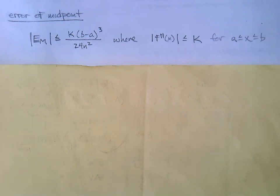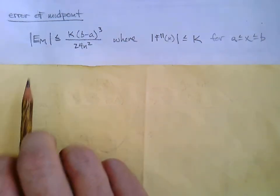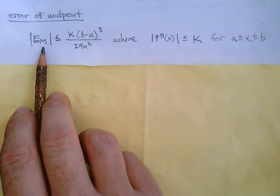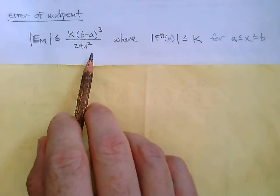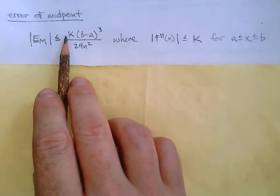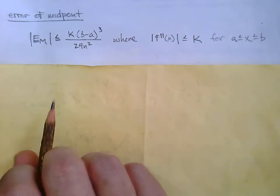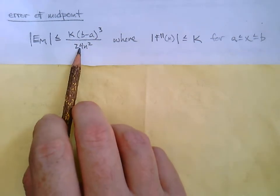Here's how we find the maximum possible error of the midpoint rule. We refer to it as capital E sub M — the error of the midpoint — and we put absolute values around it since we always think of error as a positive number, like a distance. We say the error is less than or equal to K times (b minus a) to the third, over 24n squared.